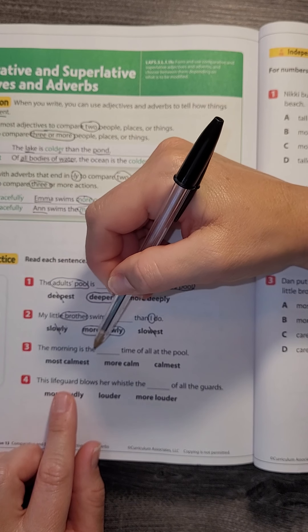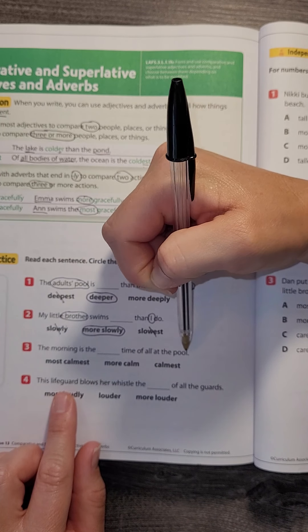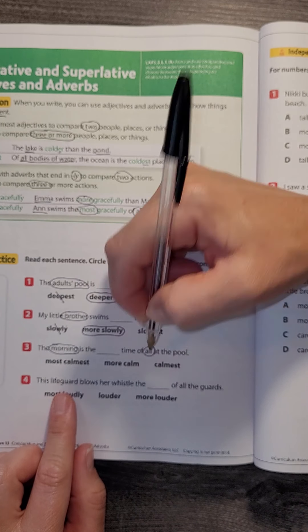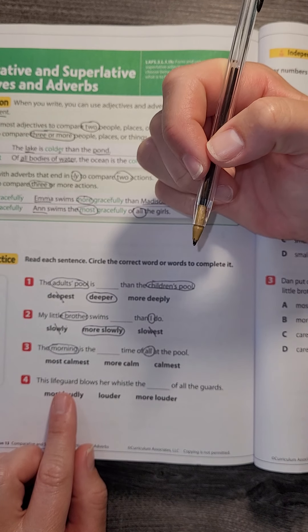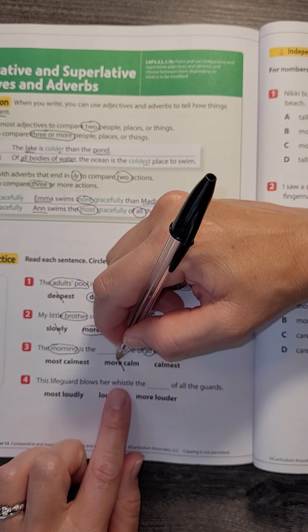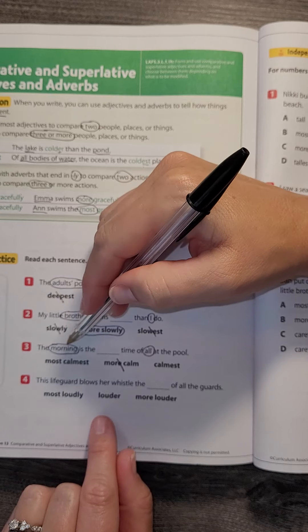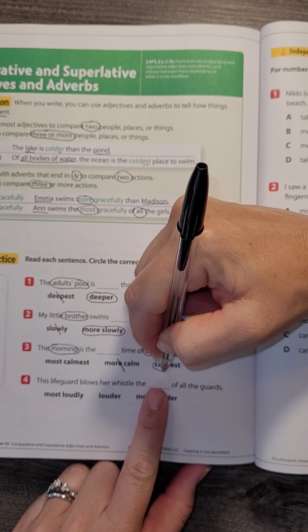The morning is the blank time of all at the pool. So now I'm comparing morning to all, which is more than one. I know it's not going to be 'more' because that's only two. The morning is the calmest